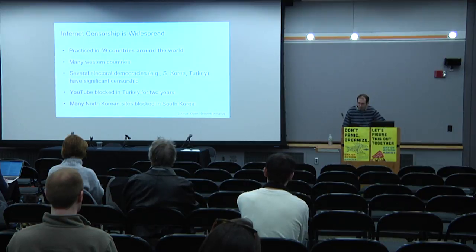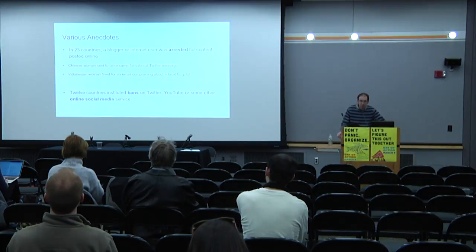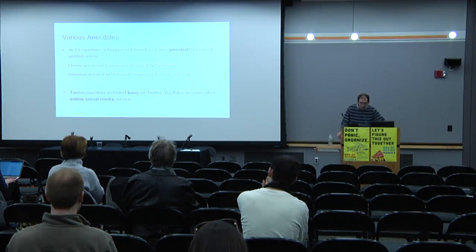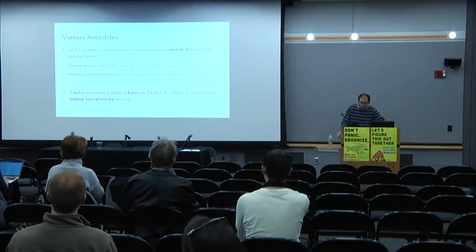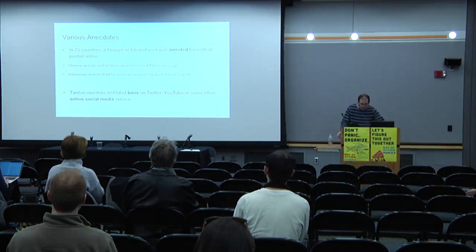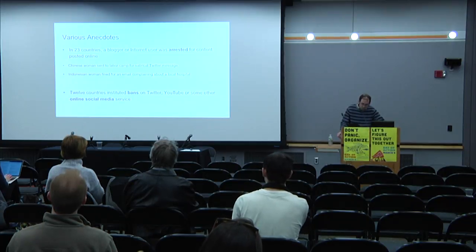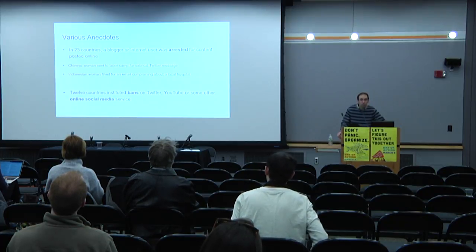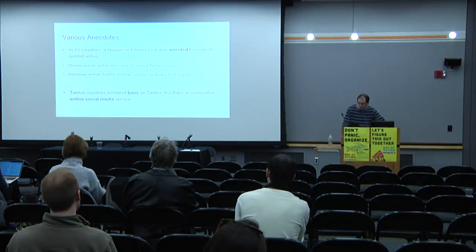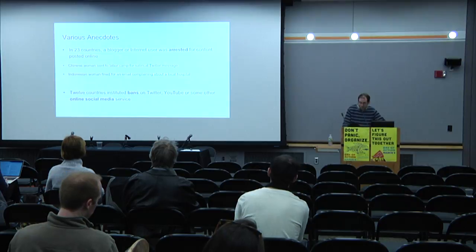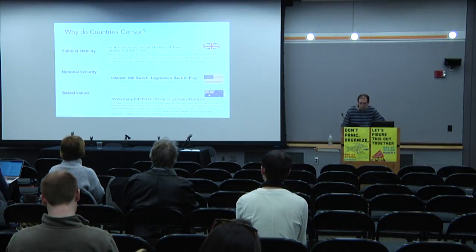One way a government can exert information control is by blocking access to websites and content. But there are other things governments can do — they can arrest users. One woman was sent to a labor camp for a Twitter message. There was an Indonesian woman who was fined for an email where she complained about a hospital. A lot of countries ban services like Twitter and YouTube. Online social media is a very popular category for blocking.